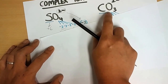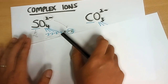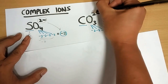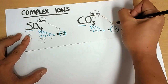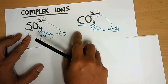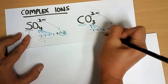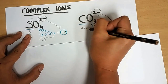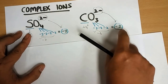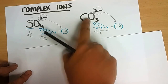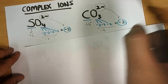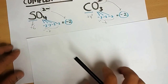Carbonate CO₃²⁻ has three oxygens, each at minus two, giving minus six total. The overall charge of carbonate is minus two. So carbon must be plus four, because plus four minus six gives you an overall charge of minus two. That is how we calculate the unknown — you can always find the unknown based on the summation of charges.